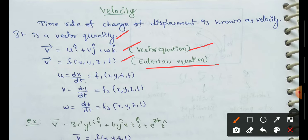The Eulerian equation is the formula. V̄ = function of x, y, z, t.